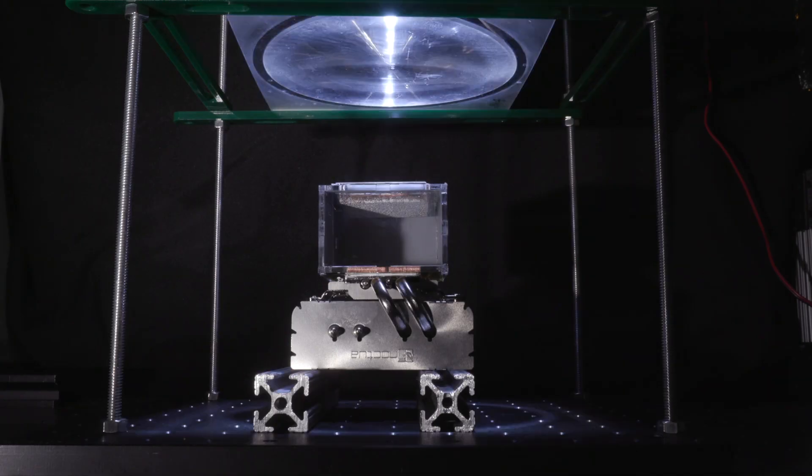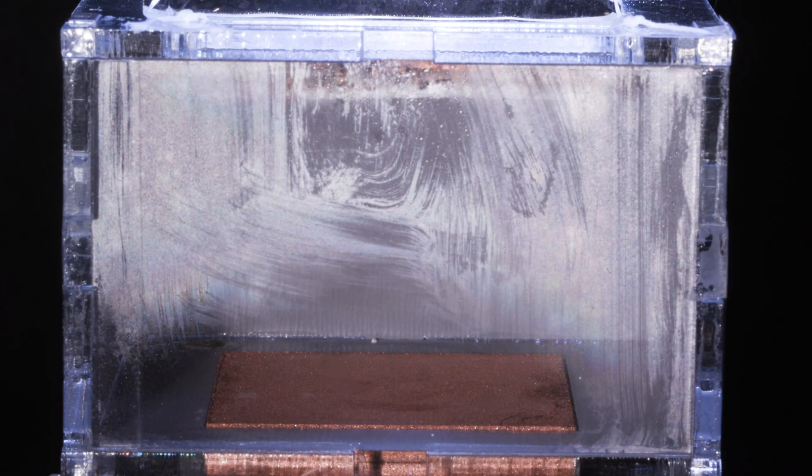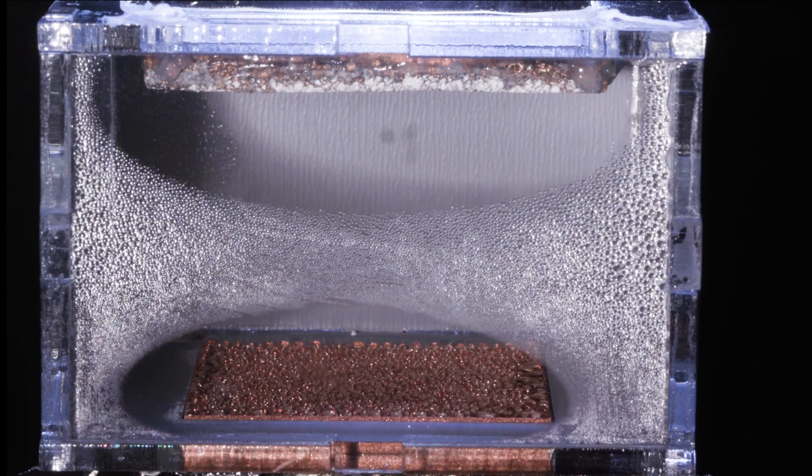The composite is then heated by the sun to release the vapor into a chamber where it is condensed into liquid and collected.